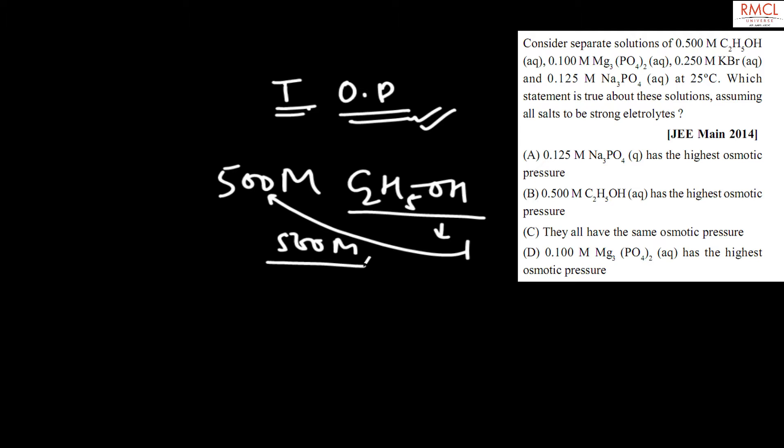Similarly, for Mg3(PO4)2, 0.100 will be multiplied by five to give 0.500 concentration. Similarly for KBr and for NH3PO4.